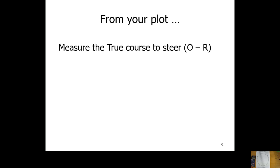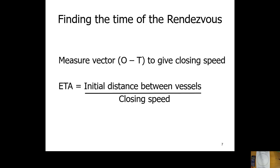Measure the true course to steer O to R — that will tell you the course to steer. To find the time of the rendezvous, measure O to T on your plot; that gives you the relative closing speed. If you're 100 miles apart and every hour you close by 10 miles, it's going to take 10 hours. Just divide the initial distance by the closing speed and that tells you the time to rendezvous.